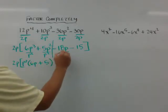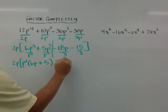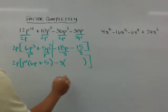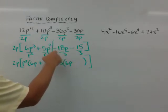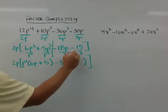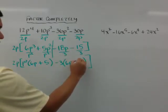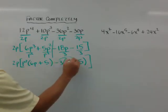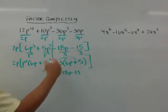Over here I can pull a 3 out — I can see that. So I'm going to pull out a negative 3. And if I pull that out, I get a 6p. And again, because I'm pulling out a negative 3, this changes to a plus 5. Just try and distribute this back in — negative 18p minus 15 — which is what I want.